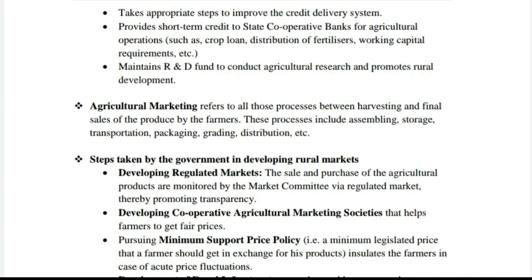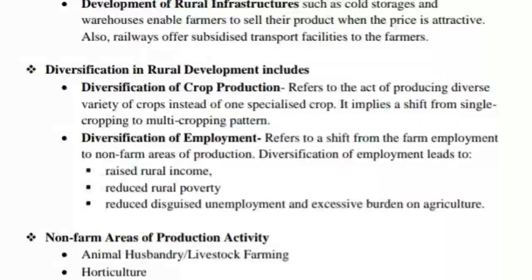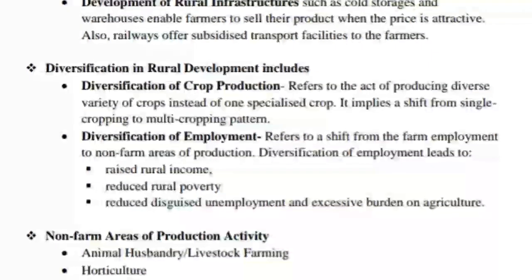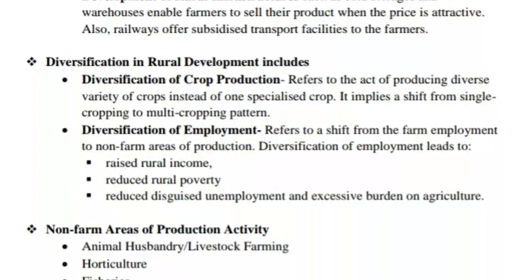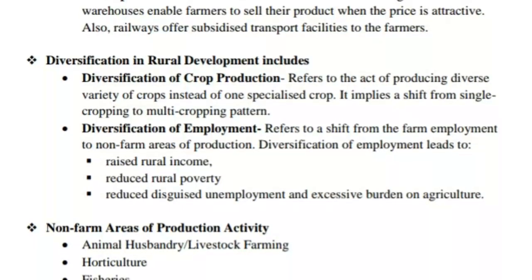The government is developing cooperative agricultural marketing societies that help farmers get fair prices. It is also pursuing a minimum support price policy — that is, a minimum legislated price that a farmer should get in exchange for his products — which insulates farmers in case of acute price fluctuations. Development of rural infrastructure such as cold storages and warehouses enables farmers to sell their products when the price is attractive.